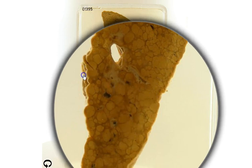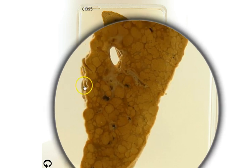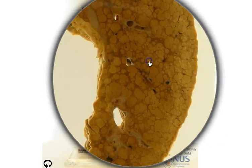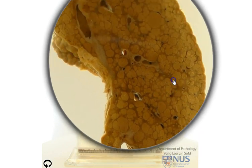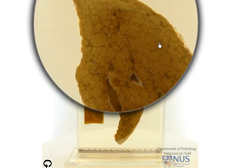If you look at the capsular surface here, you can actually appreciate how nodular it is. This will appear as a shrunken liver, so it will not be palpable clinically. What are some of the causes that we can look at and think about in this particular specimen?